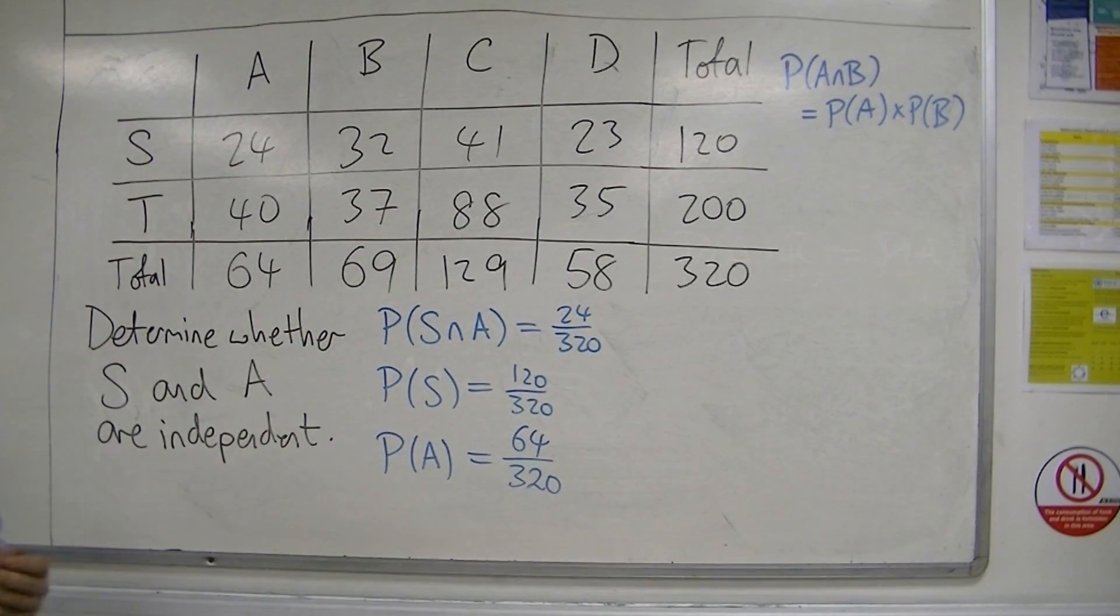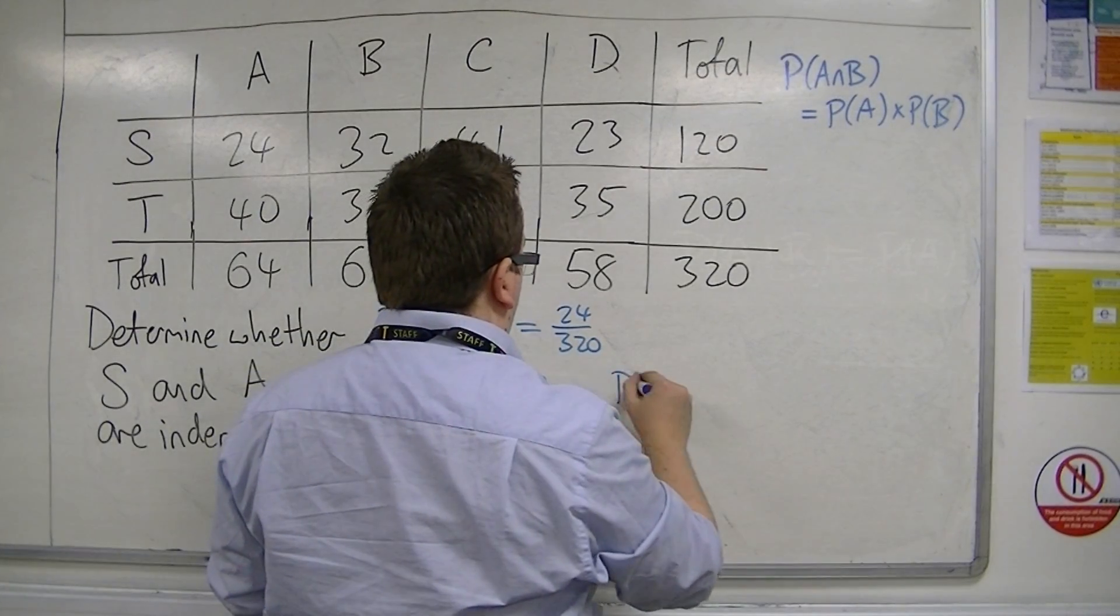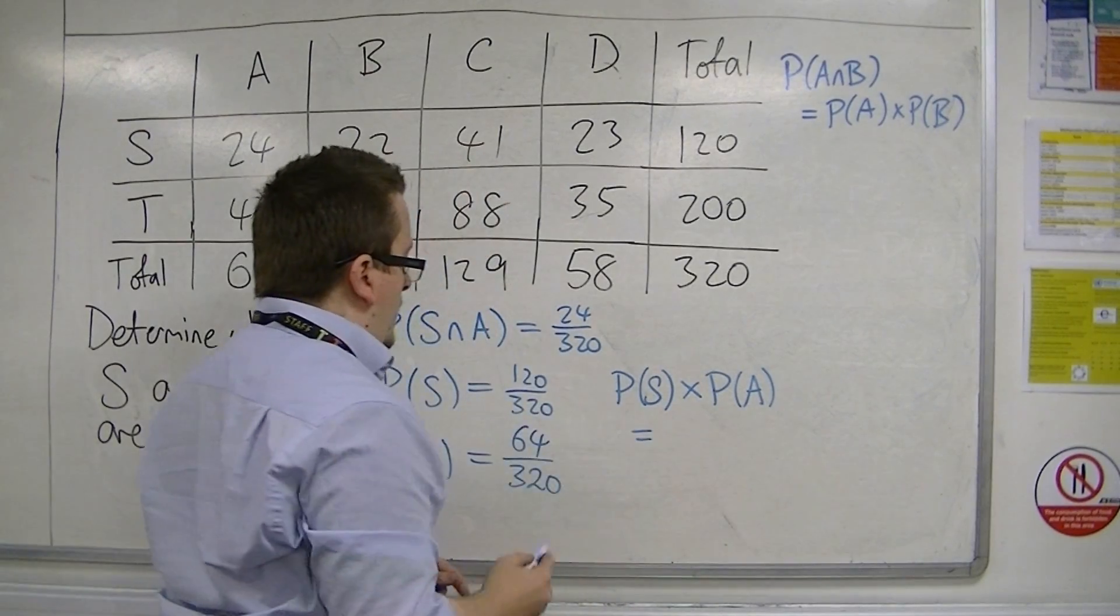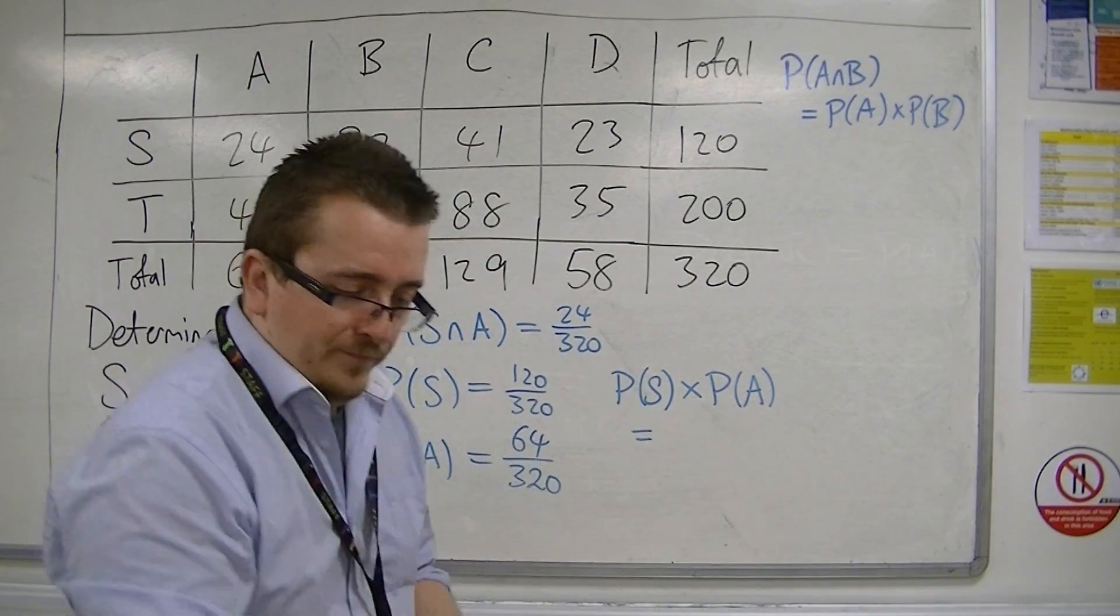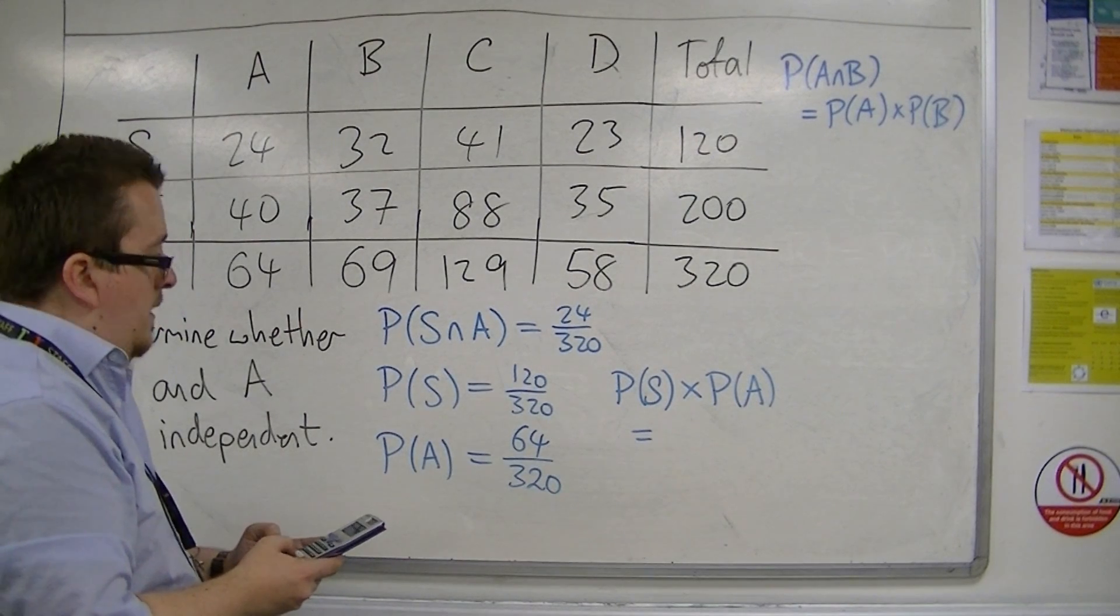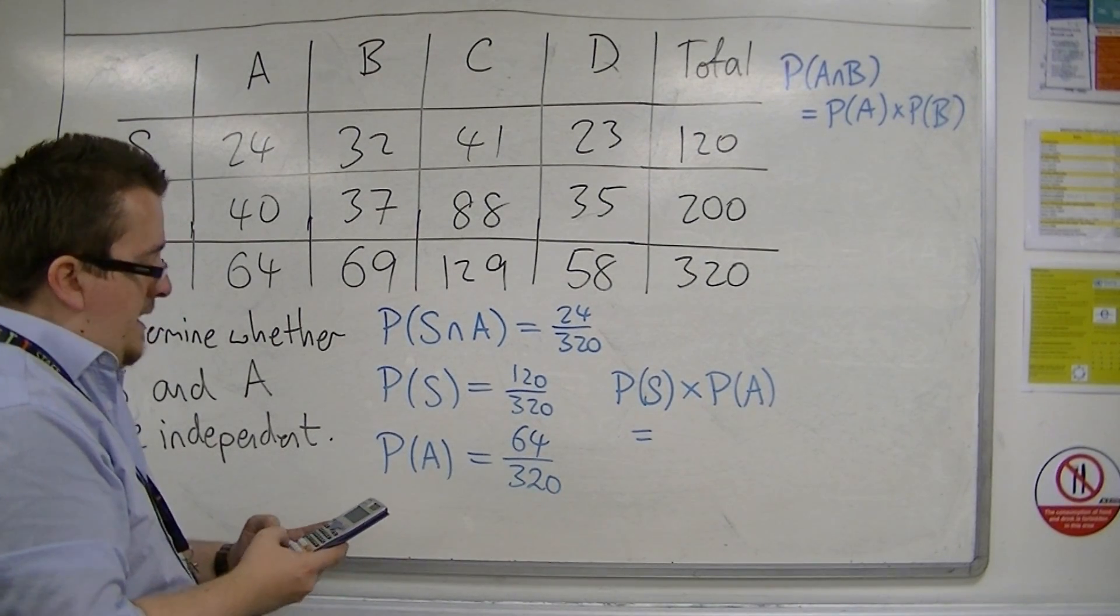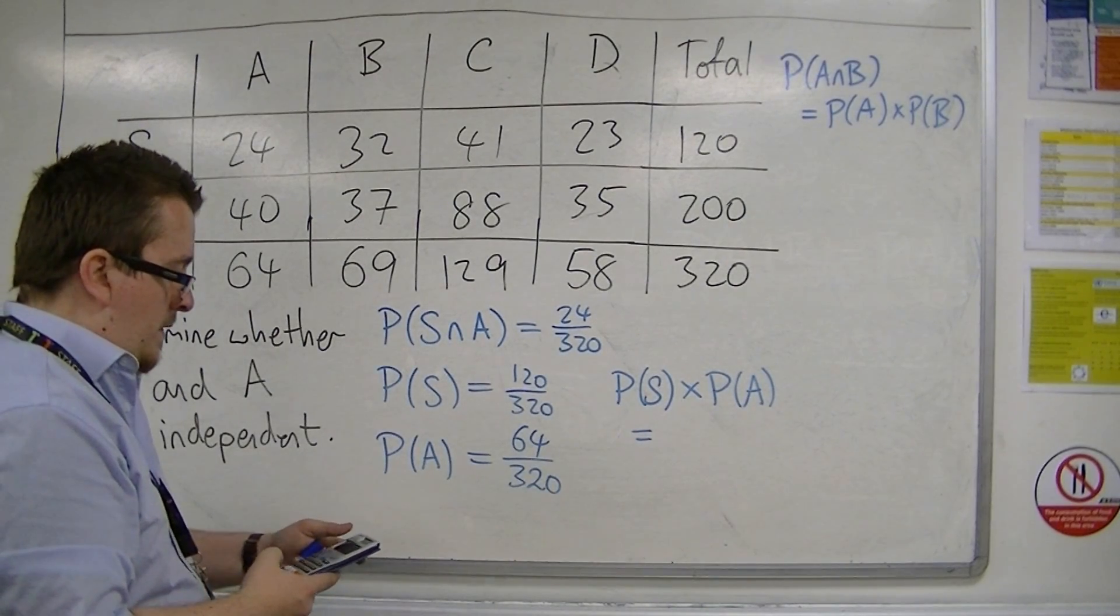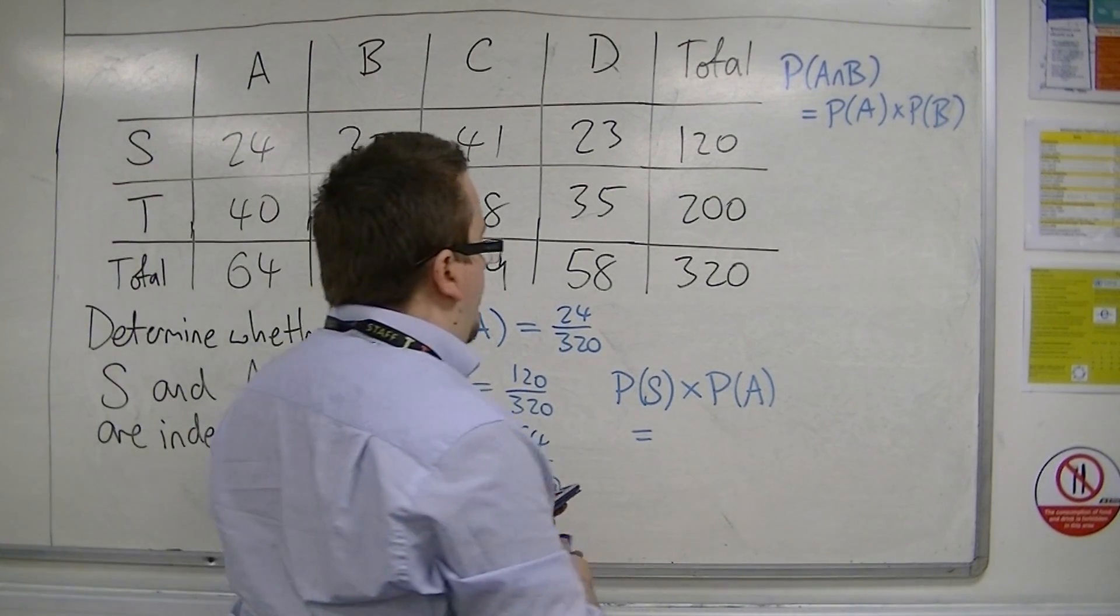So now if I multiply the probability of S times the probability of A, we have 120 over 320 times 64 over 320, and we get 3 over 40.